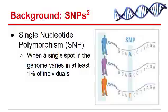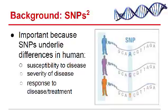What we look at are single nucleotide polymorphisms, or SNPs. This is when a single spot in the genome varies in at least one percent of individuals. As you can see in the diagram on the right, for the most part everyone has the same sequence code, except there are random spots in the genome where you will get one nucleotide that's different — and that is called a SNP.